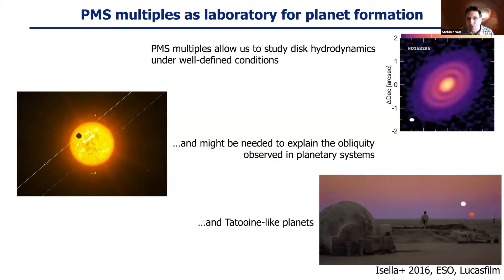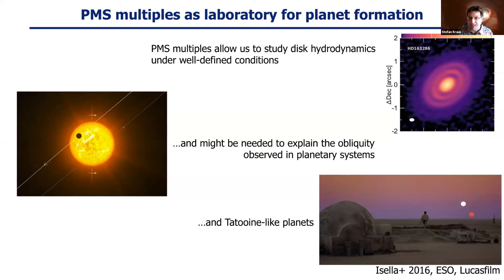Pre-main sequence multiples, such as the systems we studied here, provide an excellent laboratory to study disk hydrodynamics. This is also very relevant for planet formation studies, because we see structures like rings in young disks and need to use hydrodynamic simulations to deduce the properties of these unseen bodies. Pre-main sequence multiples have well-defined orbits, making them a great opportunity to study disk hydrodynamics under very well-defined conditions.